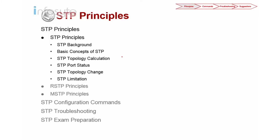On the STP principle we are going to cover a few things. First, we need to look into why we need STP and its background. Then how STP works on a basic concept. We need to look into the STP calculation, what type of port status we have, how topology changes take place, and finally the STP limitations.